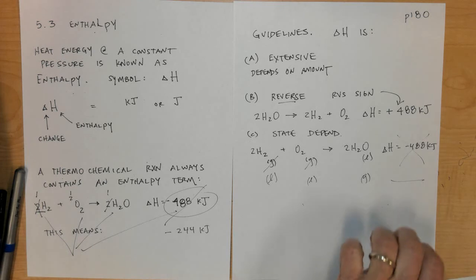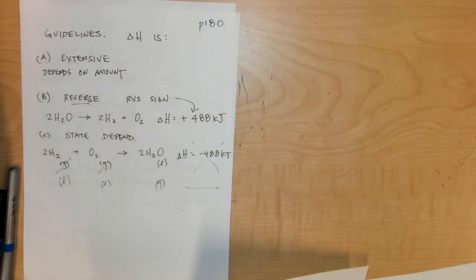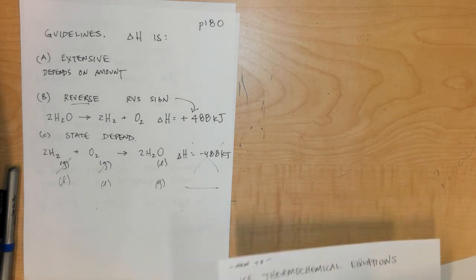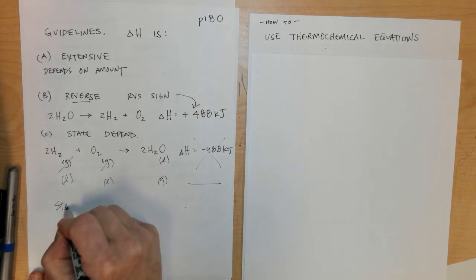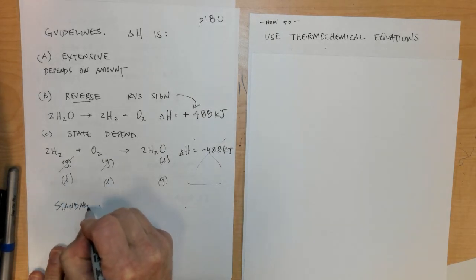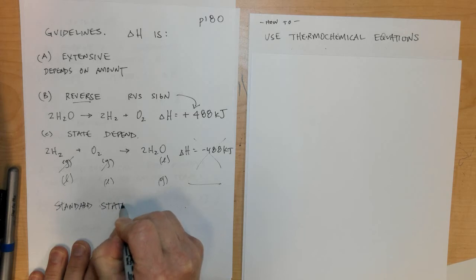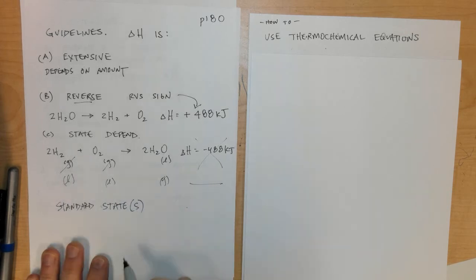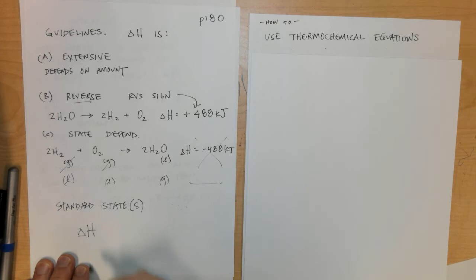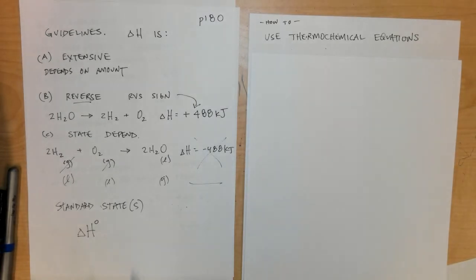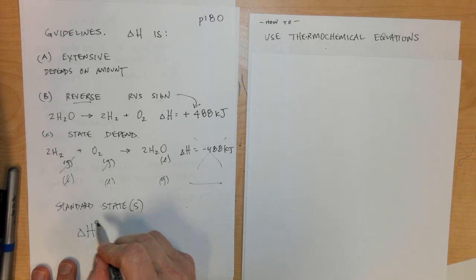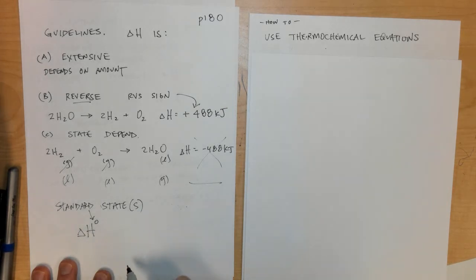Many times we assume that the state of a substance is its standard state. We'll see delta H written with a little circle in the upper right hand corner, and this little circle means standard conditions or standard states.